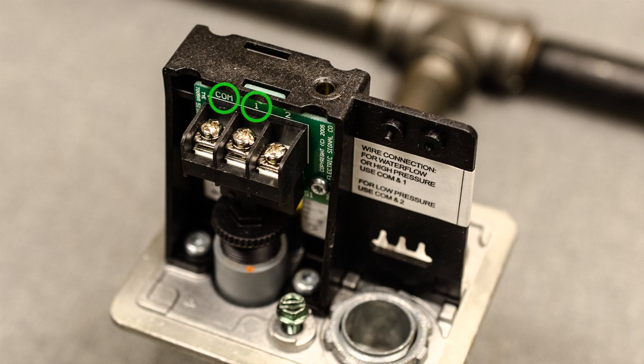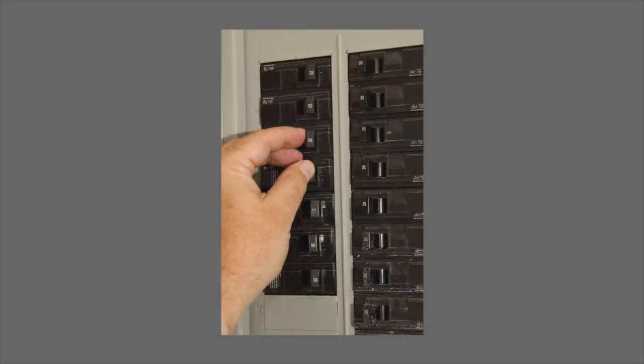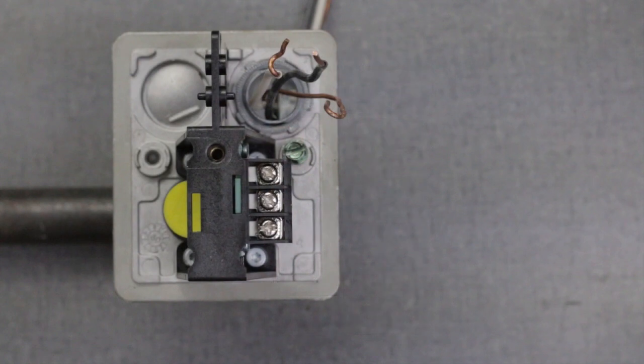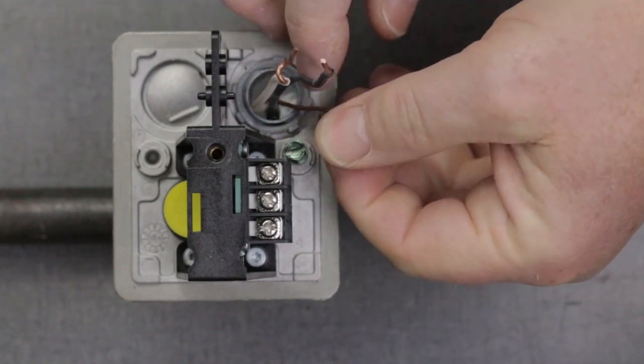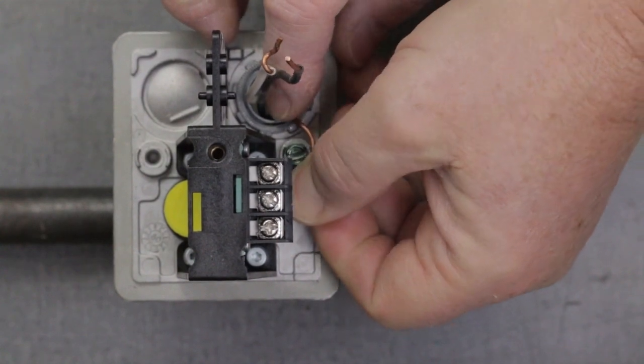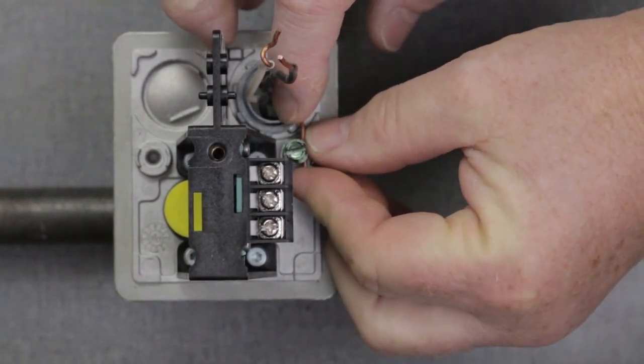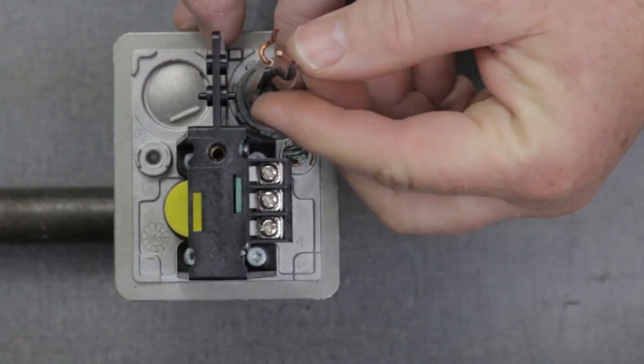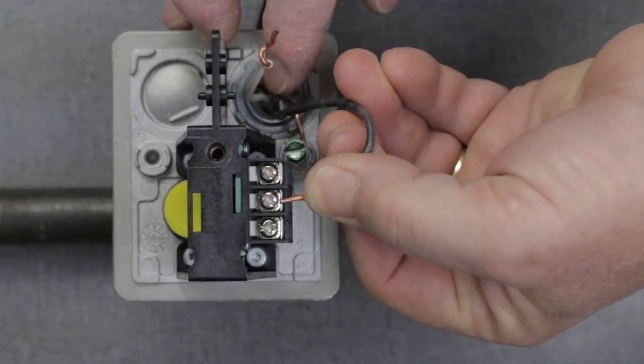These are the terminals marked COM and one. Turn off the breaker that will be used to power the bell. Pull a hot black, neutral white, and ground green or bare wire from the circuit into the pressure switch housing. Connect the ground wire to the ground screw. Connect the hot wire to terminal one.